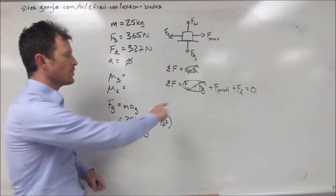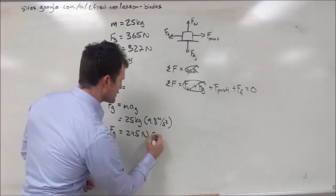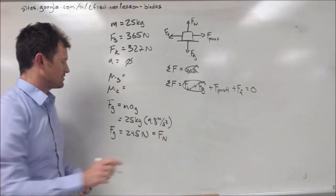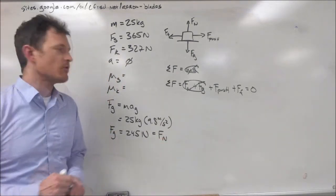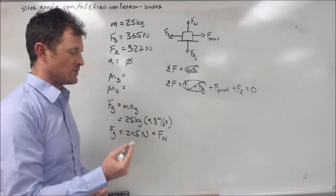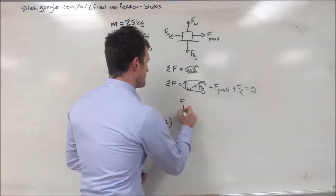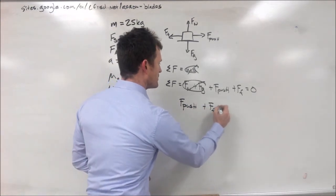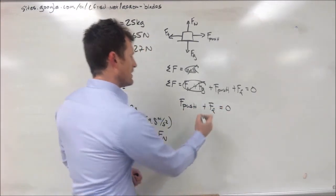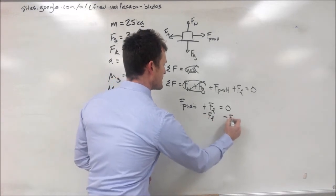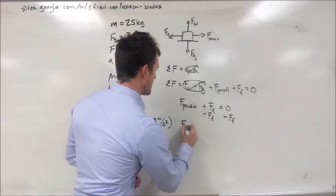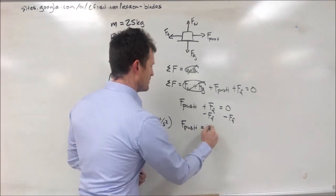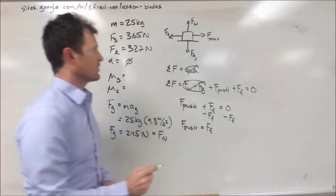And, because I told you that gravity and normal force were going to cancel each other out, we can also make our normal force equal to 245 newtons. Because of that, we can rewrite this equation one more time, as the force of our push plus the force of our friction is equal to zero. If we subtract force of friction from both sides, we see that our force of our push is equal to our friction force.